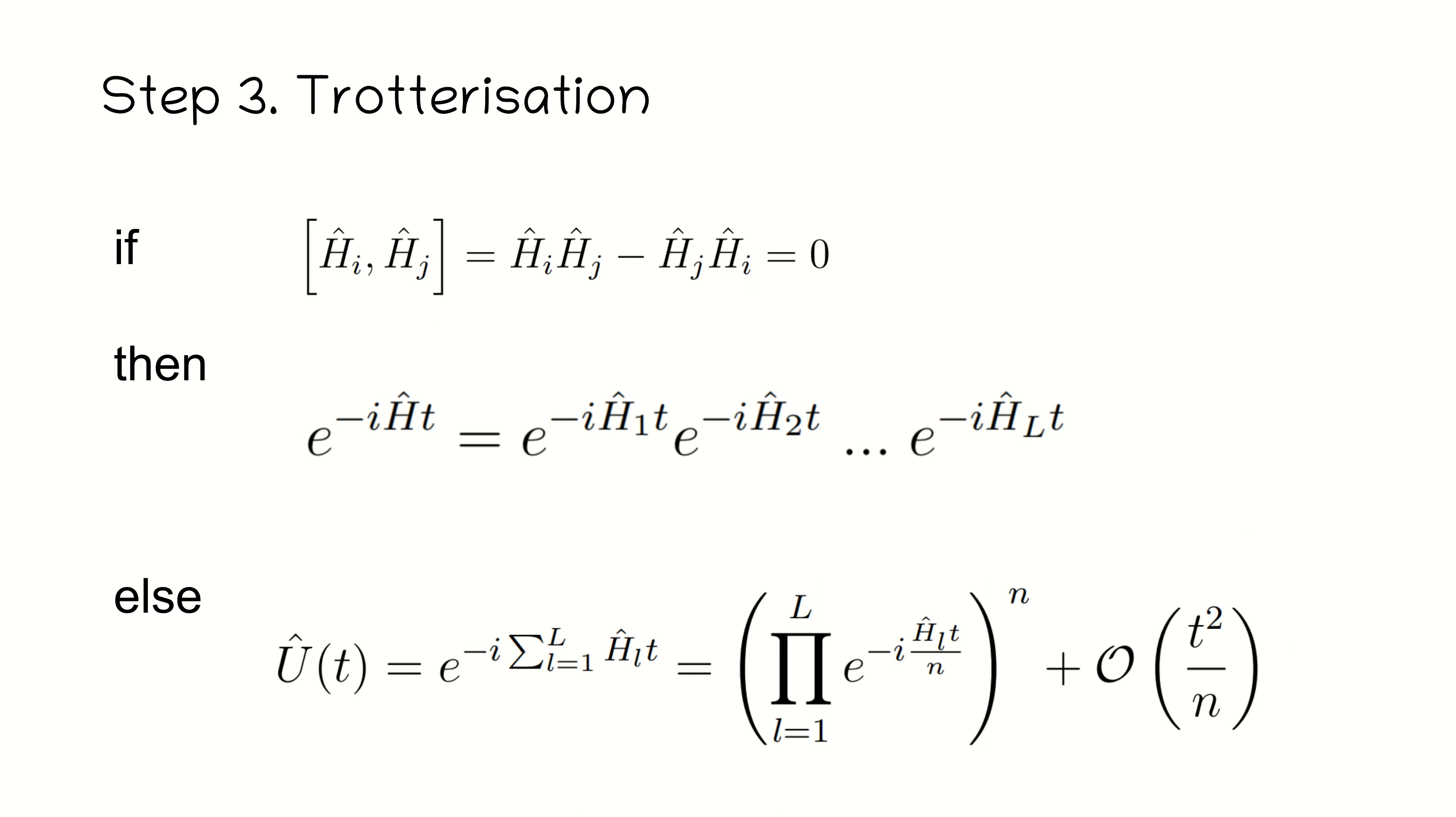Step 3. Trotterization. First, check whether the local terms commute with each other. Then, one can decompose the exponent without introducing any error. Otherwise, apply trotterization for the appropriate number of Trotter steps.